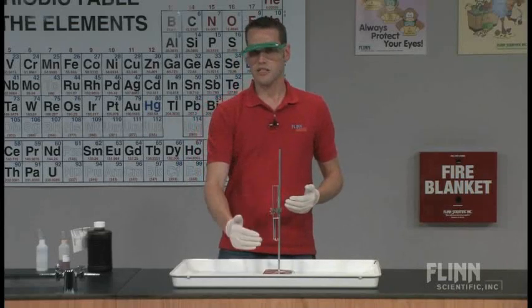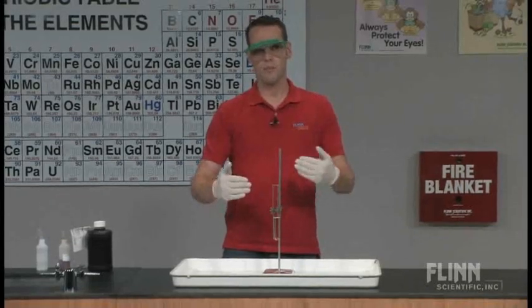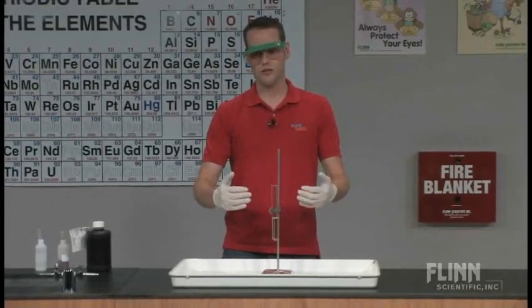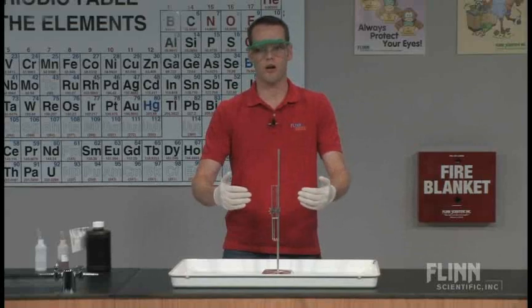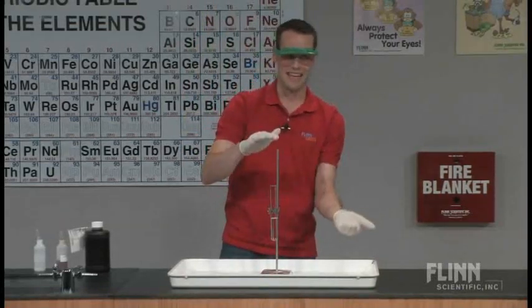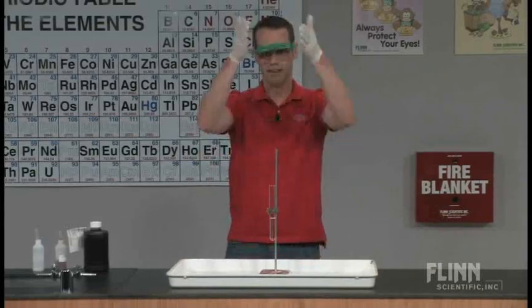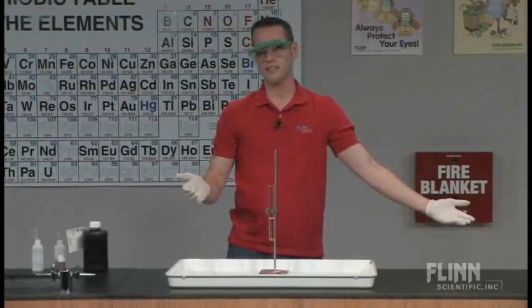You'll also notice that I have the test tube vertical here. This is the way we always tell our students never to heat anything. But for this reaction, because it's going to generate a lot of gas and will eventually explode upward, I want it to go straight up and come straight down. In this case, I don't want it to be angled. This is not a lesson in projectile motion. We want things to go straight up and down, not across the entire countertop.